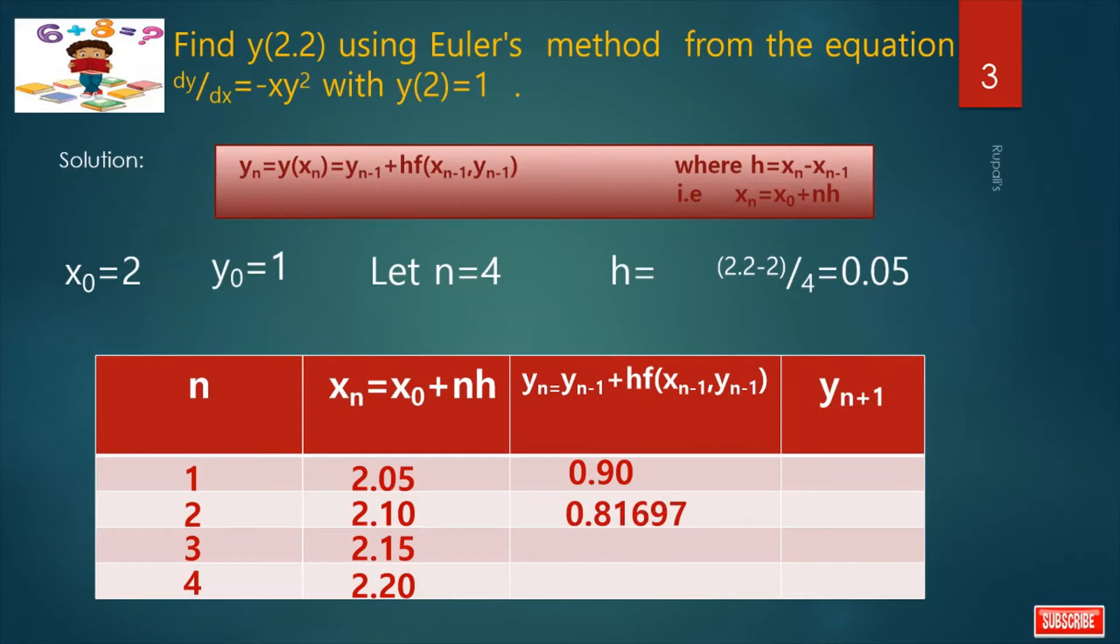After calculation I get the value. In this way I have to get the remaining rows value. Now see this one is y2.